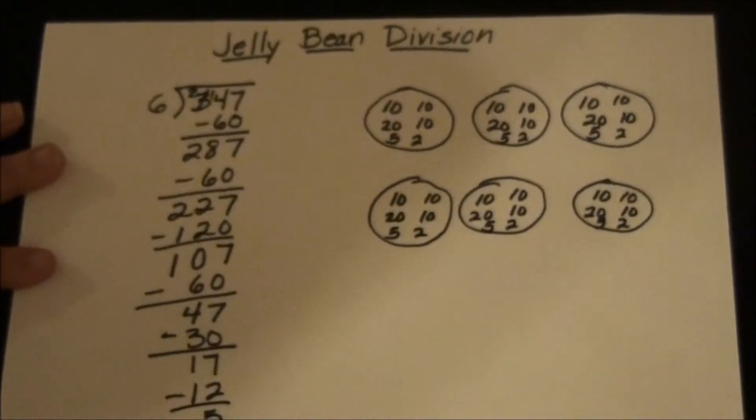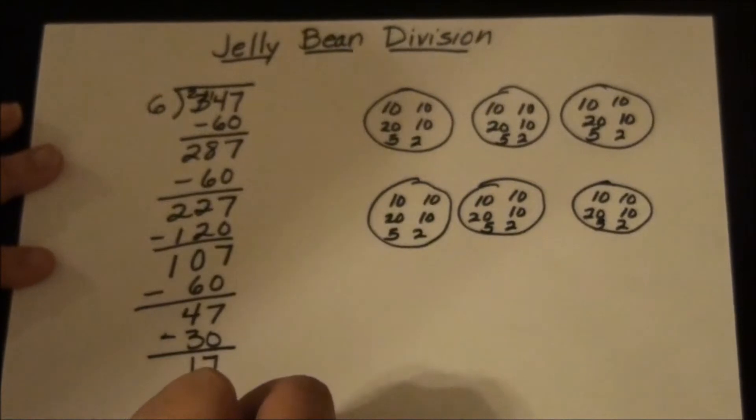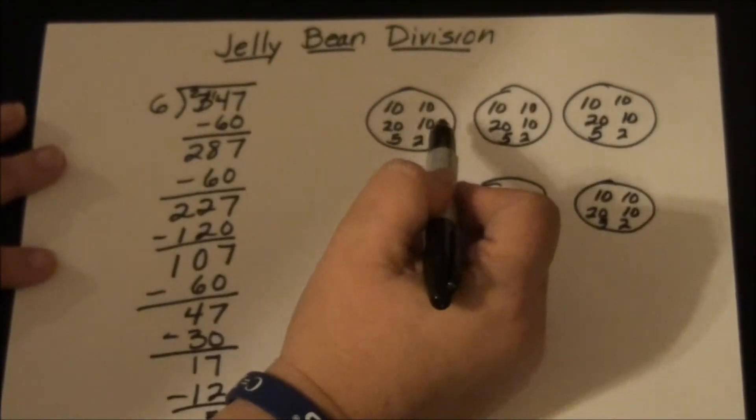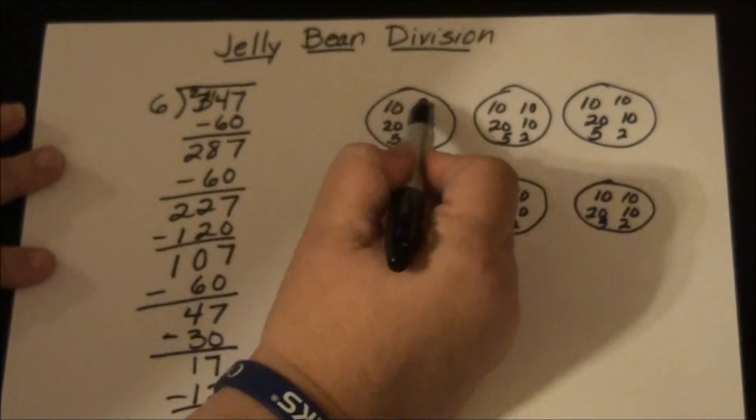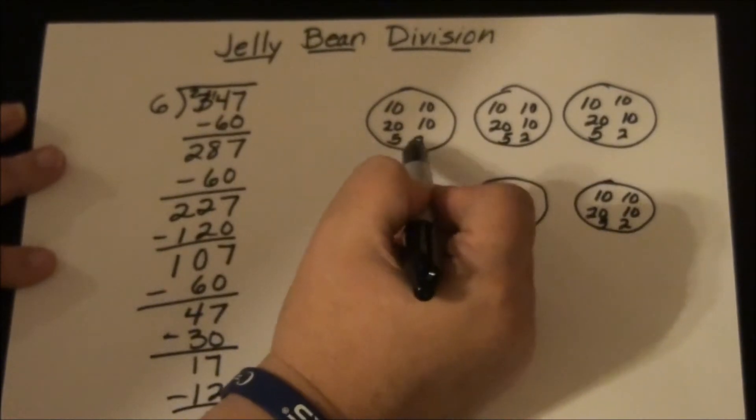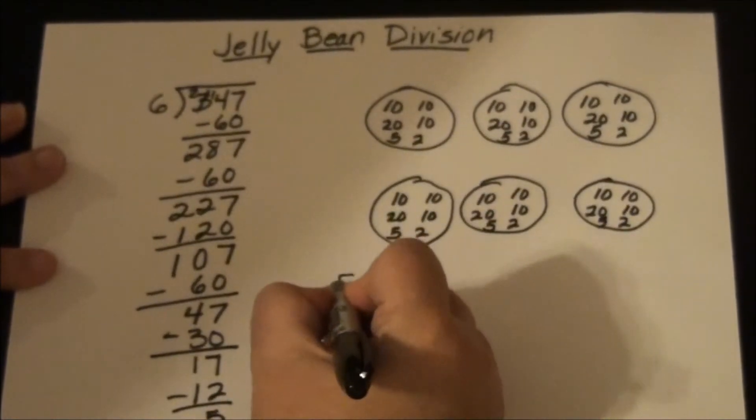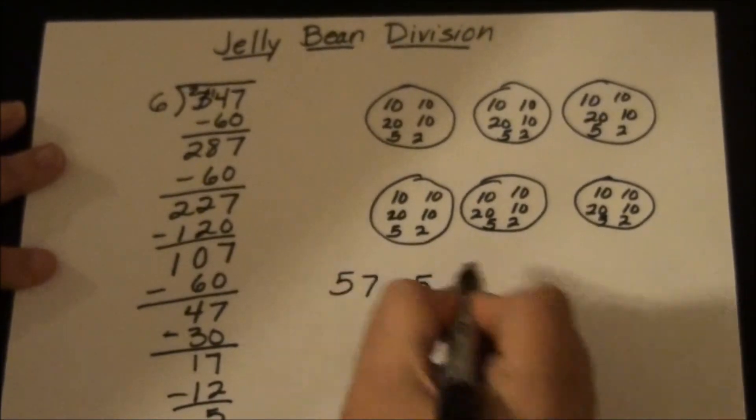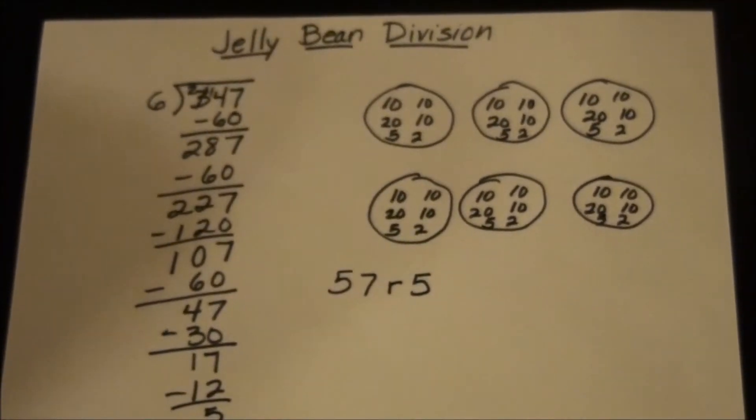Even if I do 1s, it's going to be too much. So 5 is my remainder. Now all I have to do is count what I have in one of my bowls: 20, 30, 40, 50, 55, 56, 57. So my answer is 57, remainder 5. And that is Jelly Bean Division.